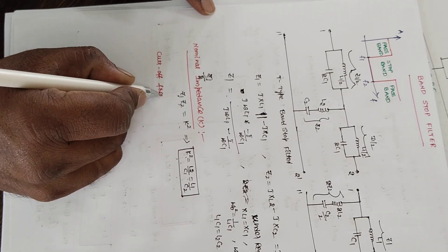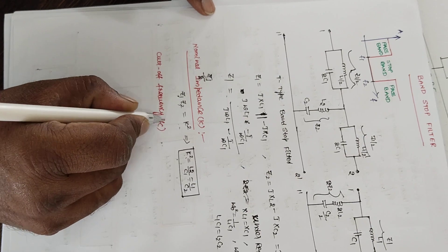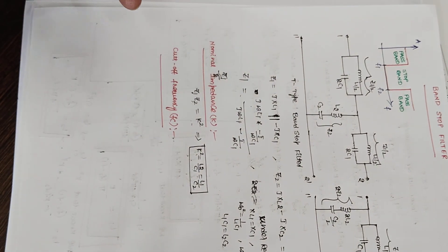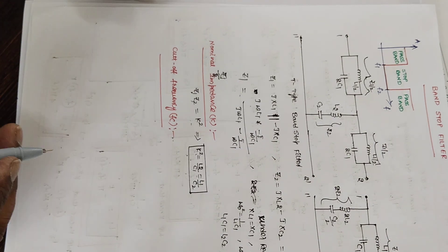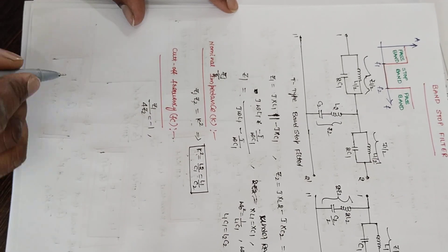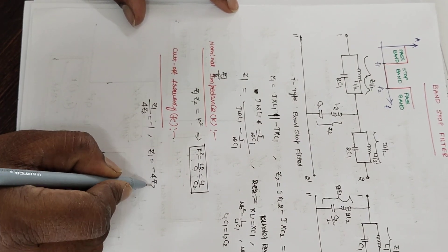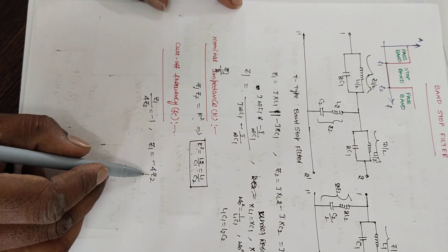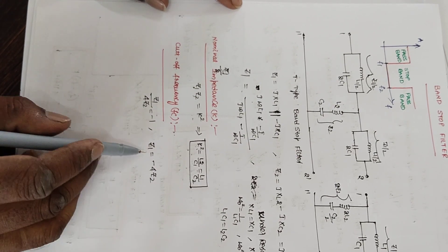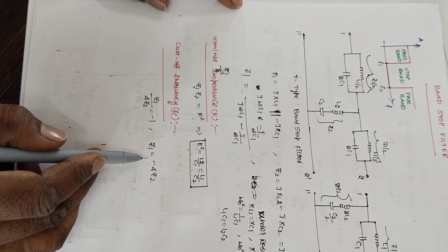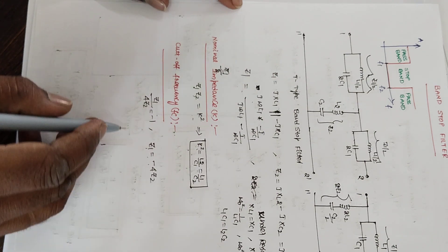There are two cutoff frequencies: f1 (lower) and f2 (upper). To get the relation between the resonance frequency and the cutoff frequencies, we use the condition Z1/(4·Z2) = -1, which means Z1 = -4·Z2. Here I will multiply both sides of this equation by Z2. In the band pass filter I multiplied by Z1, but here I multiply by Z2.